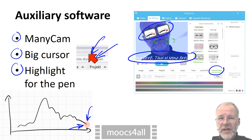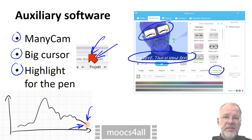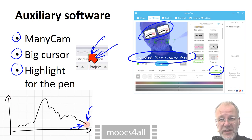This way your audience knows what you are working at, and you can use the pen for pointing. We have added some choices for big cursors and for highlighting to our link list.